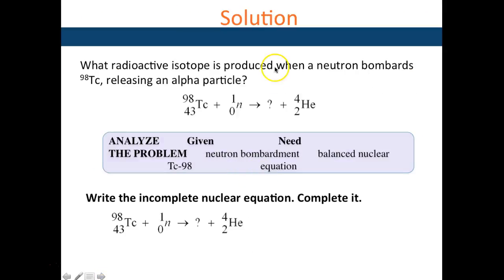What radioactive isotope is produced when a neutron bombards technetium-98 (43), releasing an alpha particle? 41 plus 2 would give you 43, and 98 plus 1 is 99. So it's element 95, and element 41 is niobium (Nb). So niobium-95 (41).